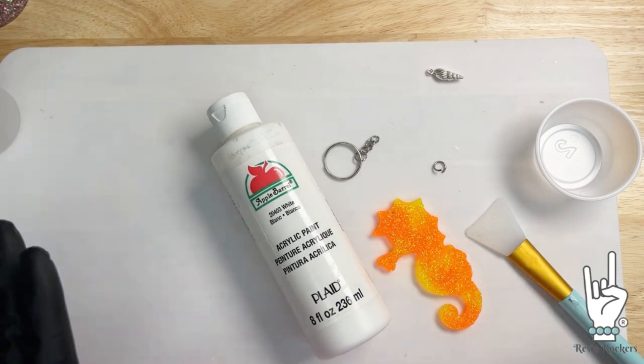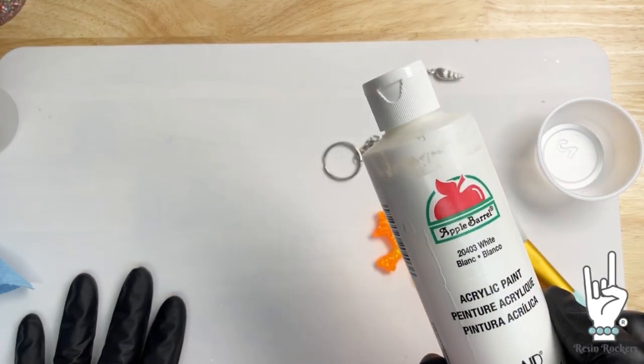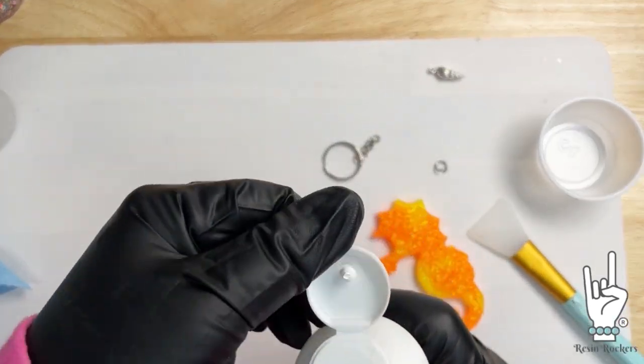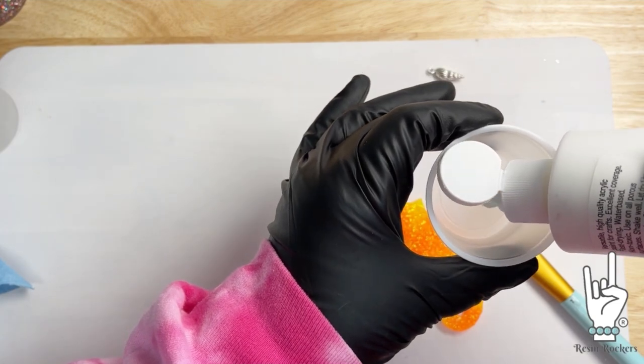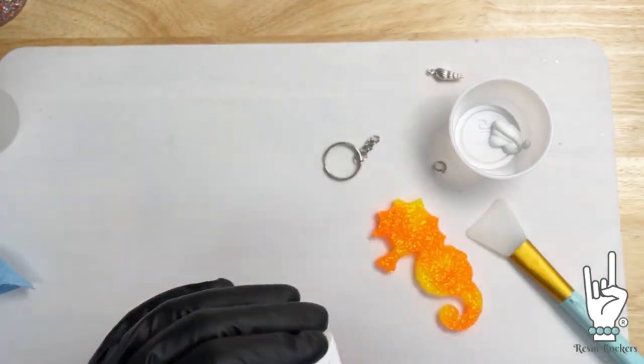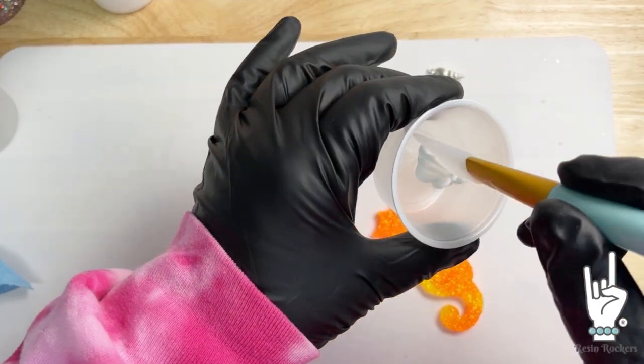So you can use white, you can use black, you can use any color of acrylic paint that you want to bring out the detail in this guy. I'm going to use white and you can just use any kind of acrylic paint. It doesn't really matter. I'm just going to squeeze a little bit into this cup.